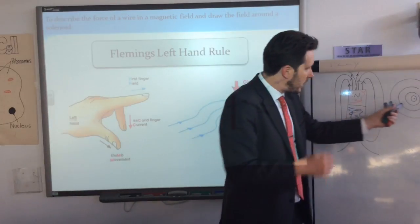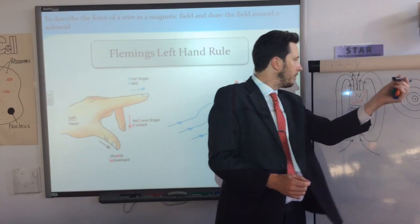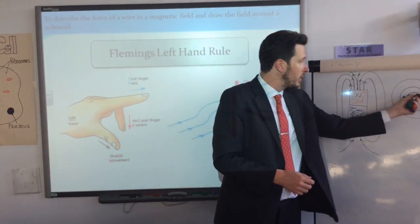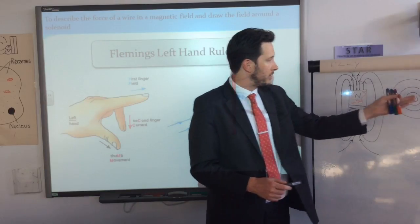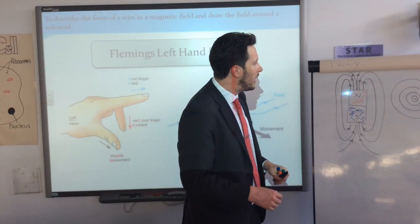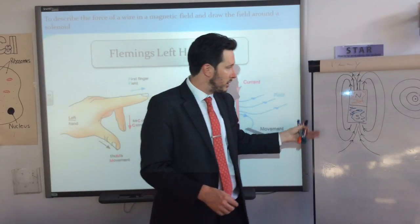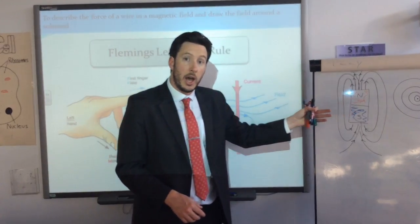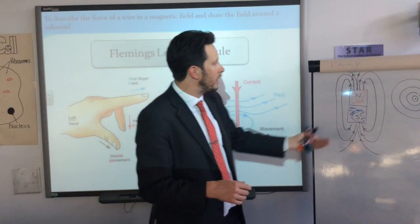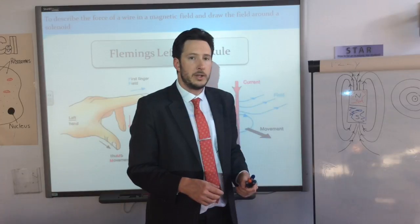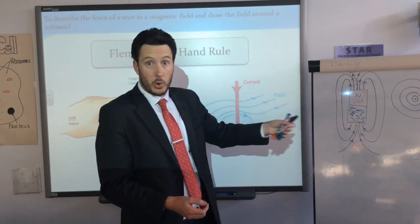I'm going to flip the direction of the current. The electrical current is now coming out of the wire — out of the board. It's difficult when drawing these diagrams because you have to represent things in 3D on a 2D plane — a flat bit of paper. So it's crucial to understand that things may be coming out of or going into the page, which you might have to draw.